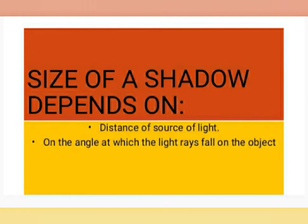Second, the size of a shadow depends on the angle at which the light rays fall on the object. When the source of light is overhead to the object, the light falls from the shortest distance, so the shadow is small. And when the light source falls on the object from a slanting direction, then the shadow formed on the screen is longer.